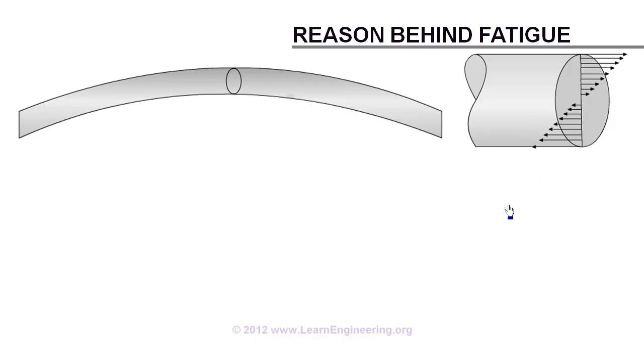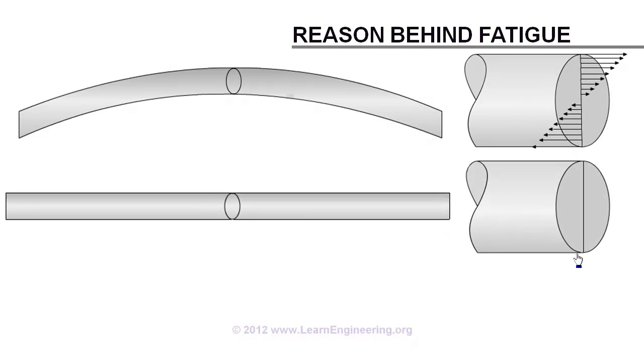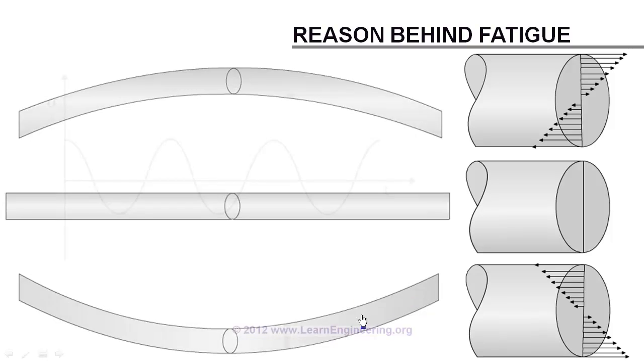When wire is at equilibrium, there will not be any stress on wire cross-section. When wire is bending upwards, there will be compression at top and tension at bottom.